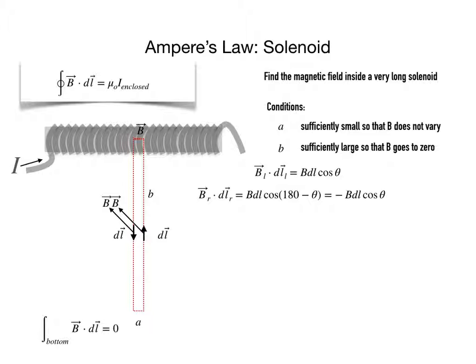On the other side as we move along the right side, we will have B dot dℓ for the right side which will have the same magnitude of the magnetic field and the same magnitude for the vector dℓ, but now the angle is not theta but 180 minus theta.